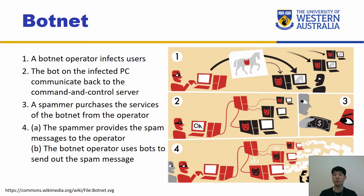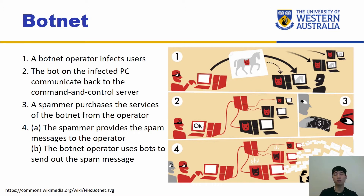A spammer purchases the service of the botnet from the operator. The operator will sell it as a service for some monetary gains. Then the spammer provides the spam messages to the operator, and the botnet operator uses the bots to send out the spam messages. This is a spam example, but it doesn't have to be spam — it can be denial of service packets, like service requests to take down a server. These are the typical steps taken in botnets.